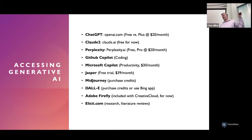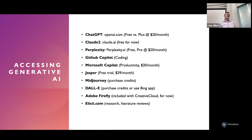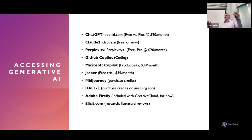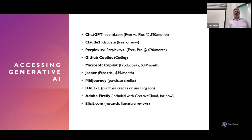Elicit.com is similar to Perplexity but specifically a tool for researchers. If you have courses that require literature reviews, or you have graduate students, it's really awesome — you can state your research questions in a really human form, specify your theoretical foundations, and it will understand what you're trying to ask, find relevant papers, and allow you to actually talk to the paper, asking it questions and having it synthesize parts for you. That's a really cool service.